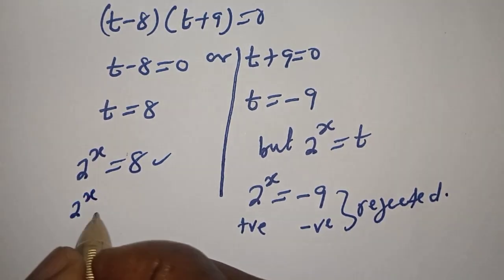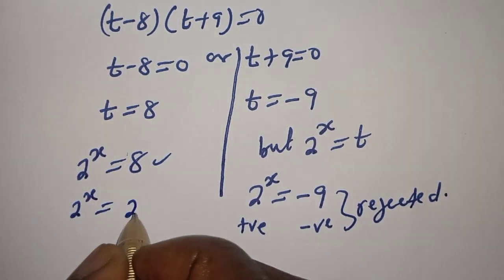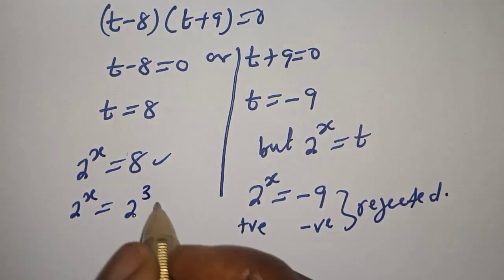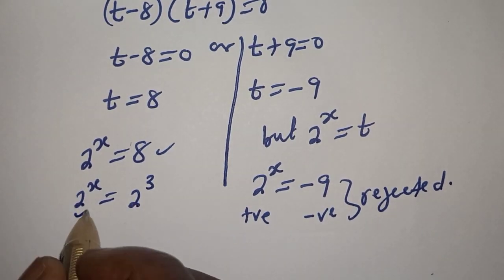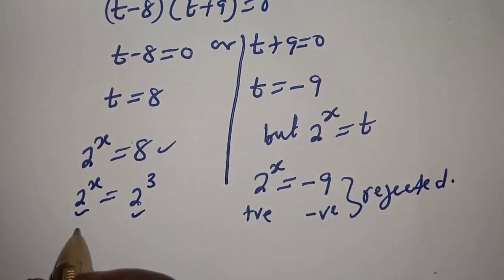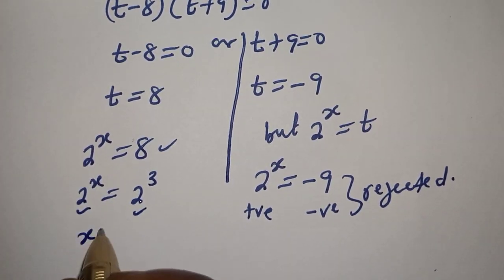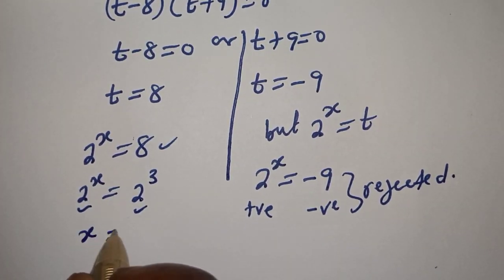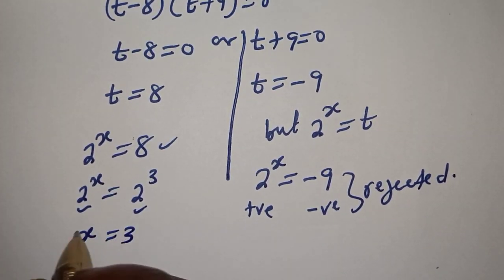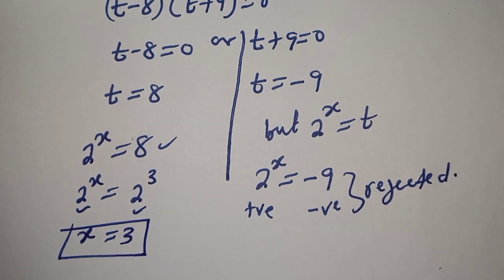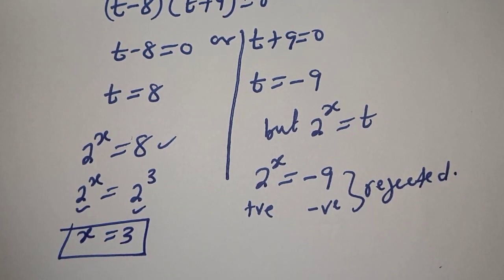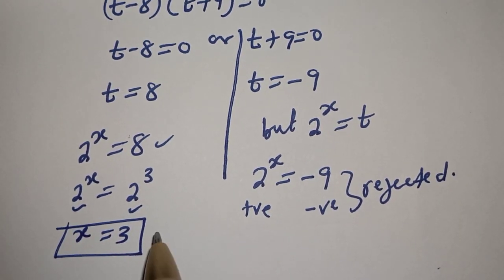From this side, we have 2 raised to power s is equal to 8. This can be written as 2 raised to power s is equal to 2 raised to power 3. Since they have the same base 2, s is equal to 3. This is the final answer. We can check to confirm if our answer is right or wrong.